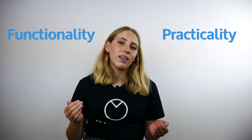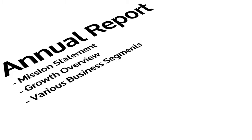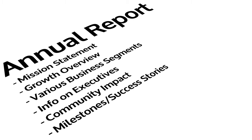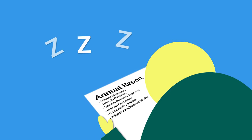So what is included in an annual report? One of the biggest challenges with annual reports is finding a way to balance the functionality with the practicality. Annual reports typically include information such as your mission statement, an overview of your growth financially, product-wise and culture-wise, various business segments, information about the company's directors and executive offices, an overview of impact on specific communities, milestones and success stories.